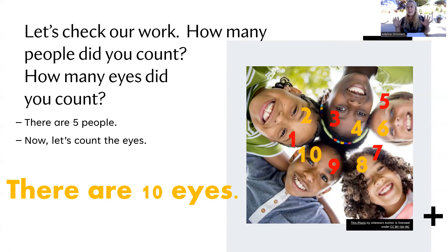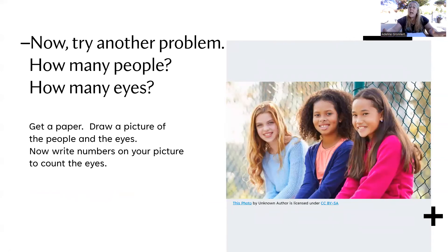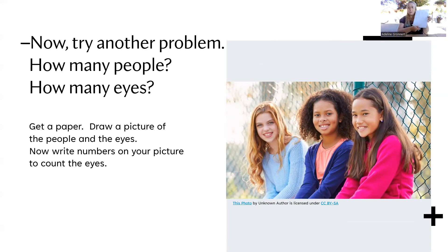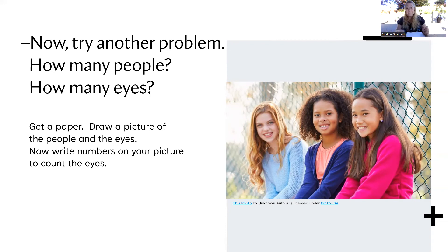Are you ready to complete another problem? Yes, let's do it — this is fun! We have a new picture of people. Do you see the people in that picture? How many people do you see? How many eyes do they have? Go ahead and get your paper ready. You can use the same paper and draw a picture of the people and then draw their eyes. When you're done, write the counting numbers on your picture to count the eyes. If you need to pause the video to complete this work, go ahead and do that now.